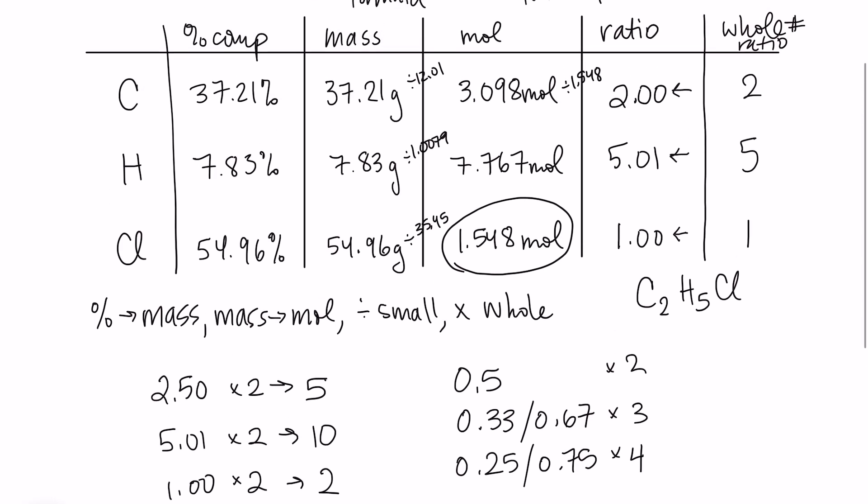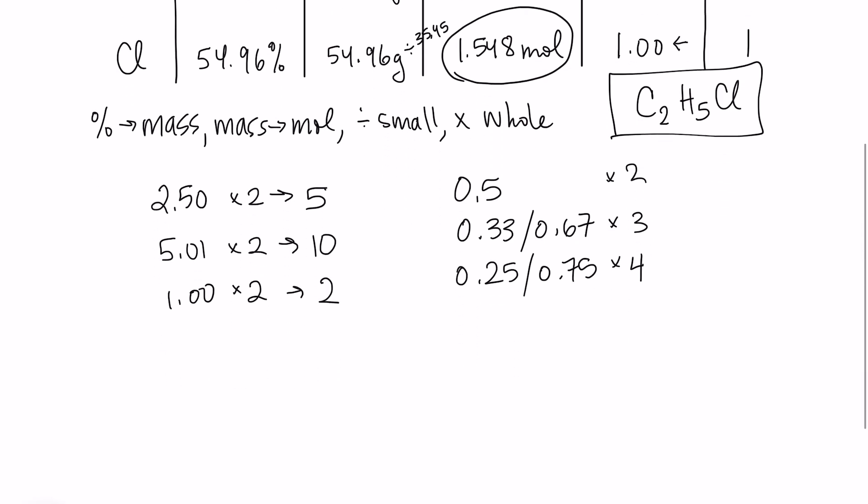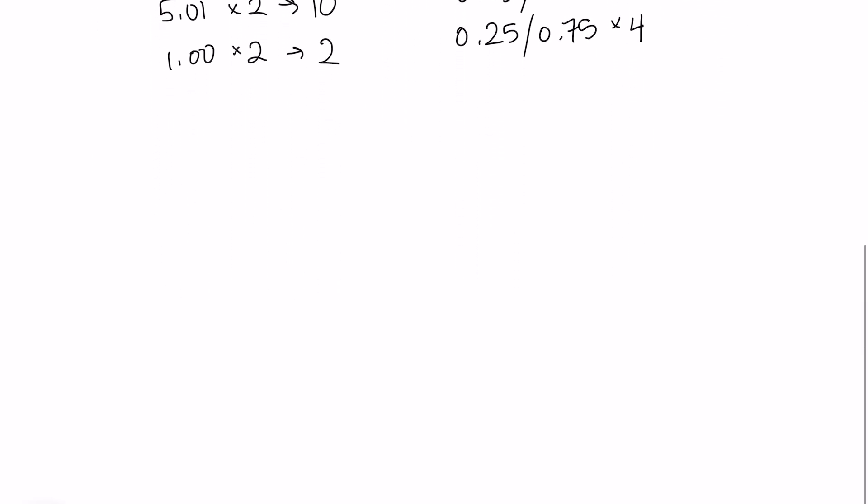So that gives us the empirical formula. The last thing that we might need to do here is find the molecular formula for this compound. And we have our empirical formula, C2H5Cl. And in order to find the molecular formula, we need one additional piece of information, and that is the molecular mass of the compound. And they've told me that the molecular mass of the compound is 129 grams per mole.